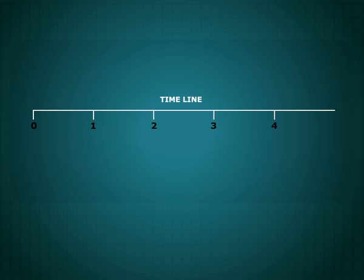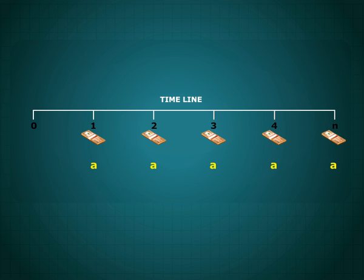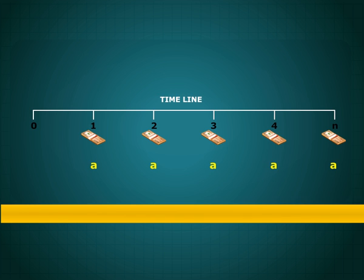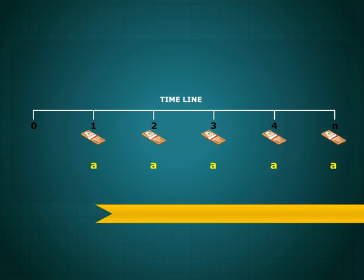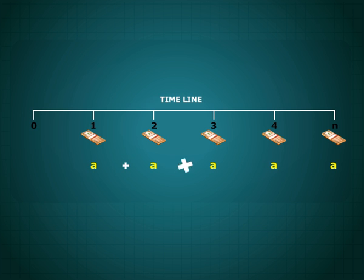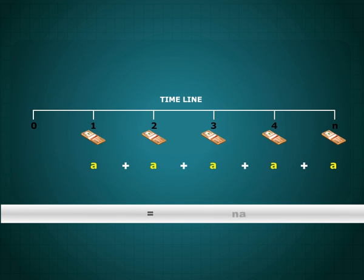Suppose we deposit equal amounts of cash flow in a bank account every year for N years, and the rate on bank deposits is r percent. We want to know the money that will be accumulated in the bank account at the end of N years.